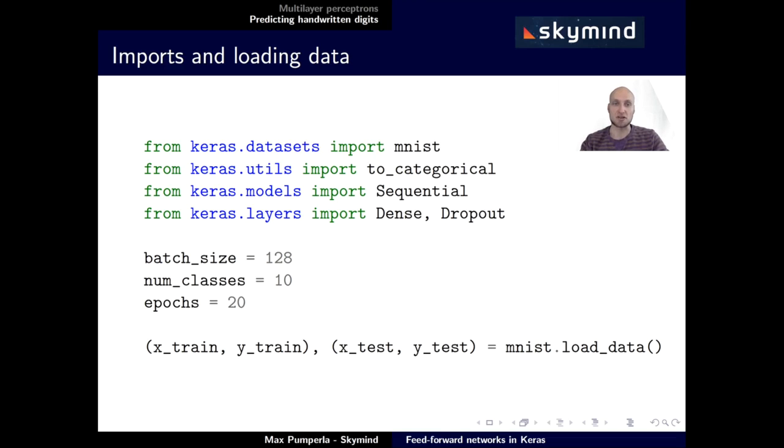To build this application, we first import the MNIST dataset from Keras, then also import the utils function that we use later on, and our sequential model, and the two layers that we're going to use, Dense and Dropout.